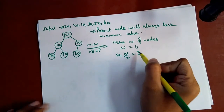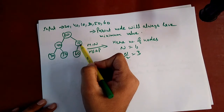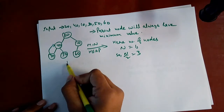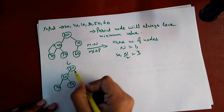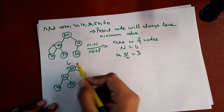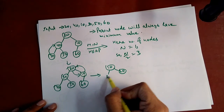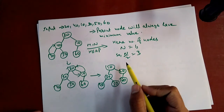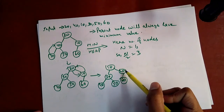n divided by 2 is 3, so we start comparing from node 3. Here 10 is smaller than 60, so no swap needed. Now comparing node 2: 30 is smaller than 40, so it will be replaced, giving 20, 30, 10, 50, 40, 60. Now checking node 1: 20 is greater than 10, so it will be replaced, giving 10, 20, 30, 40, 50, 60. We verify: 10 is smaller than 30, 20, and 30 is smaller than 40 and 50, and 20 is smaller than 60. So we have created a minimum heap.